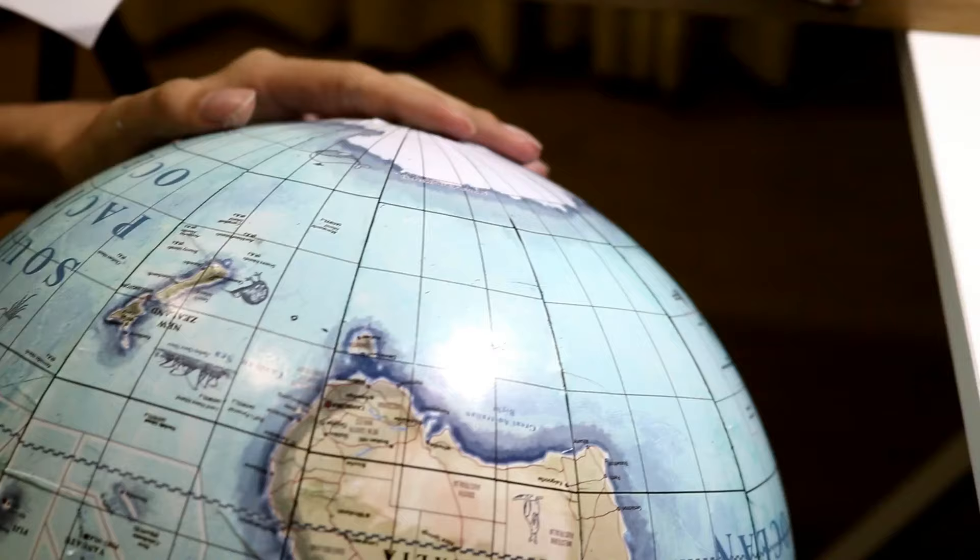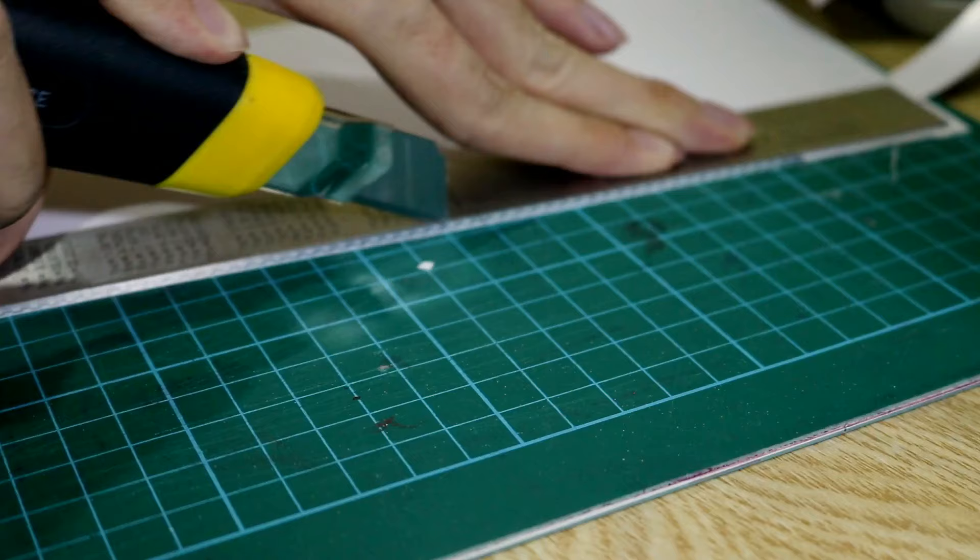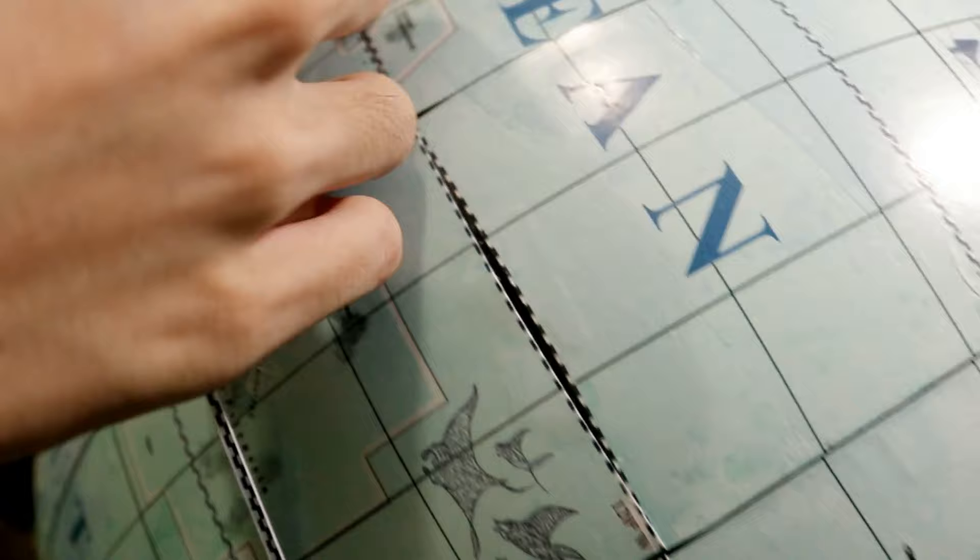And finally I've applied all of the gores. This took me 2 days. What am I even doing with my life? The equator doesn't look that clean, so I'm applying a band of equator around the globe to cover up the imperfection.